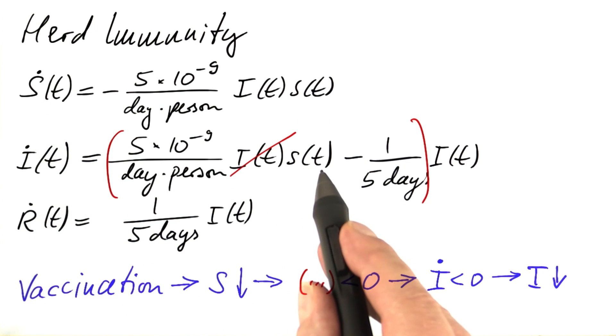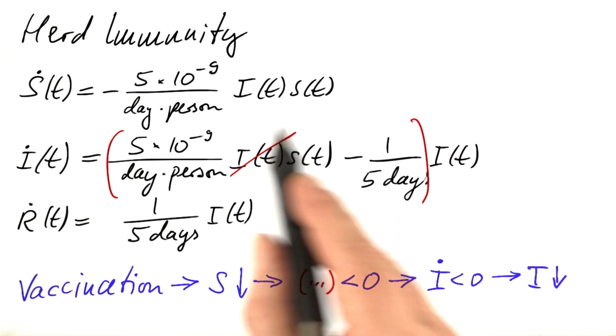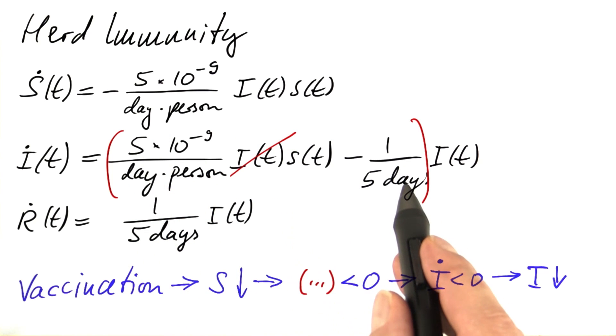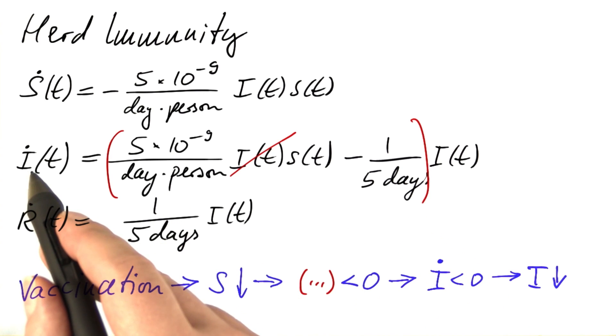Over the course of time, more susceptible people get infected. The number of susceptible persons decreases, which means this first term gets even smaller, and the expression in the red parenthesis gets even more negative.